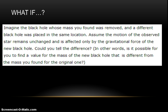What if the black hole was replaced with a new black hole in the same location, yet the motion of the star remains unchanged and is only affected by the gravitational force of the new black hole? Could you tell the difference? Since the motion of the star remains unchanged, this means that the position data is the same. The position data is essentially what I used to calculate the mass of the black hole. So, the mass of the new black hole would be the same as the one we just predicted, which is 1.99e31 kg.